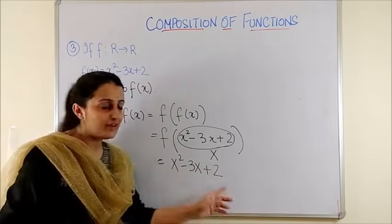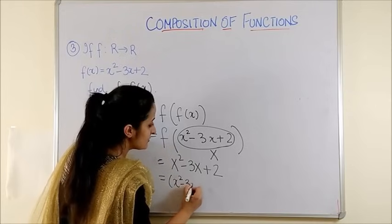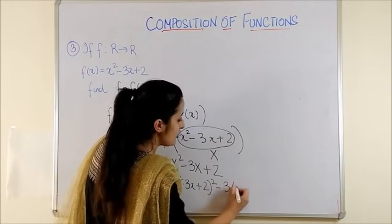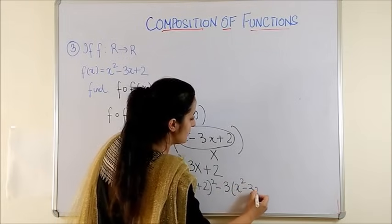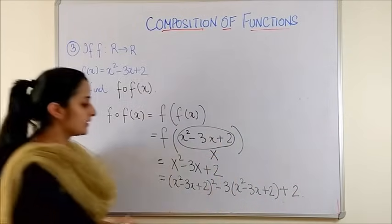And now, putting back the value for this capital X, you get x square minus 3x plus 2 whole square minus thrice of x square minus 3x plus 2 plus 2.